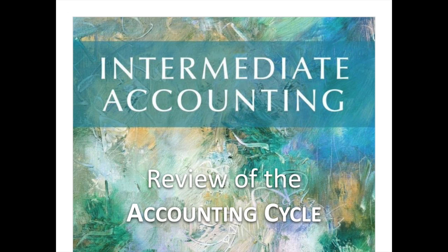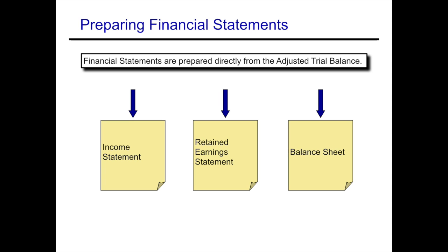Now that we've gone through the majority of the accounting cycle, we are ready to do the culmination of all this work: preparing the financial statements. The financial statements are prepared directly from the adjusted trial balance. From the adjusted trial balance we'll be able to make the income statement, the statement of retained earnings, and the balance sheet.